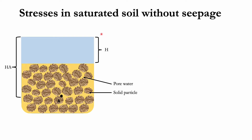Let's consider this figure we have here in our slide. This figure shows a column of saturated soil mass with no seepage of water in any direction. The total stress at the elevation of point A here can be obtained from the saturated unit weight of the soil and the unit weight of the water above it.